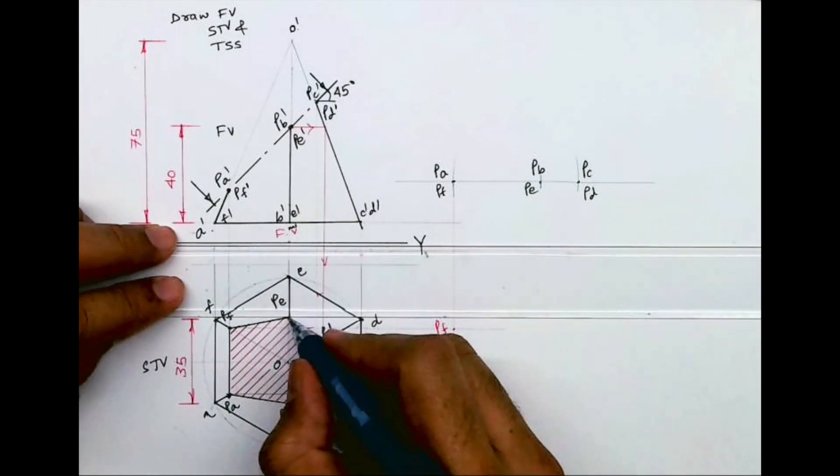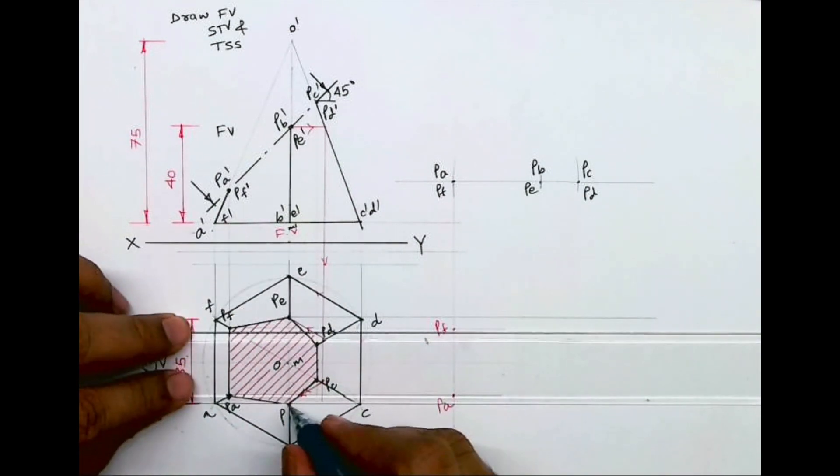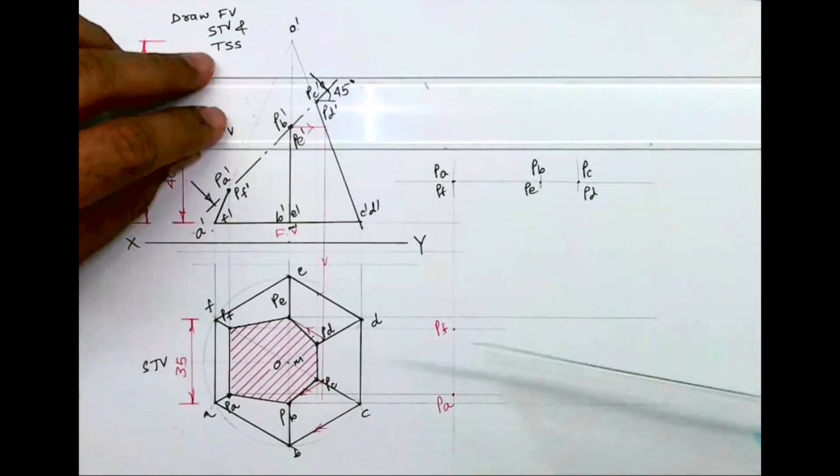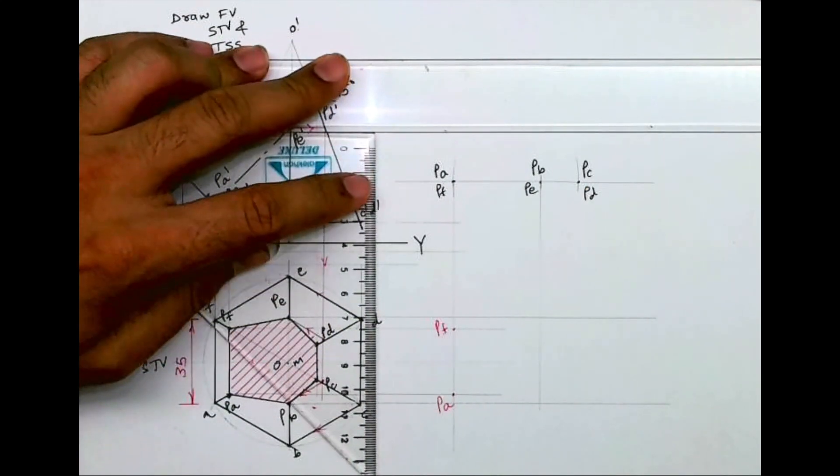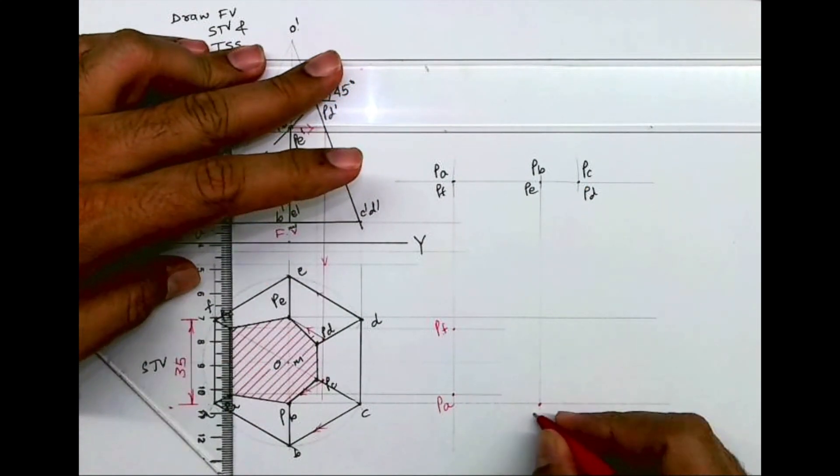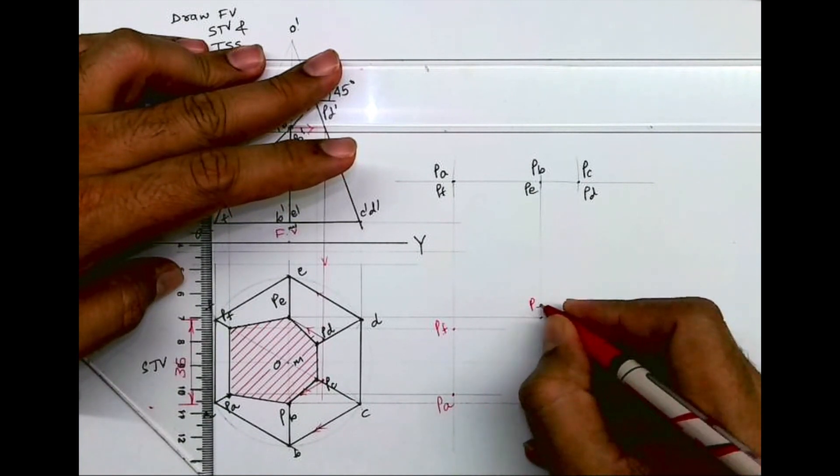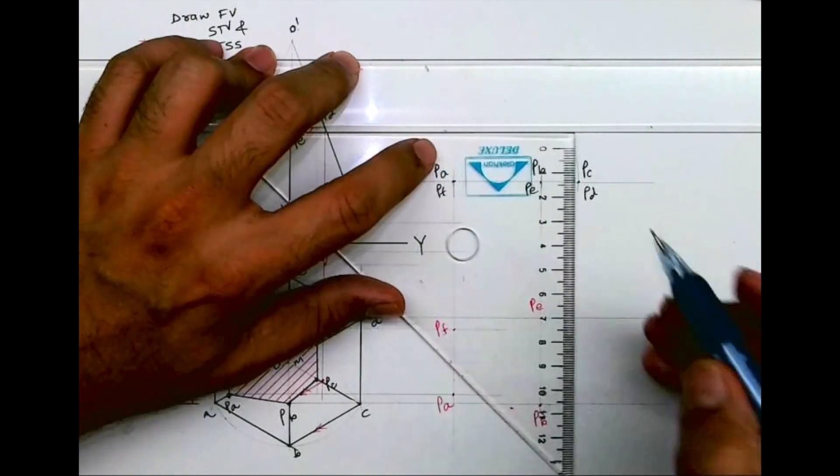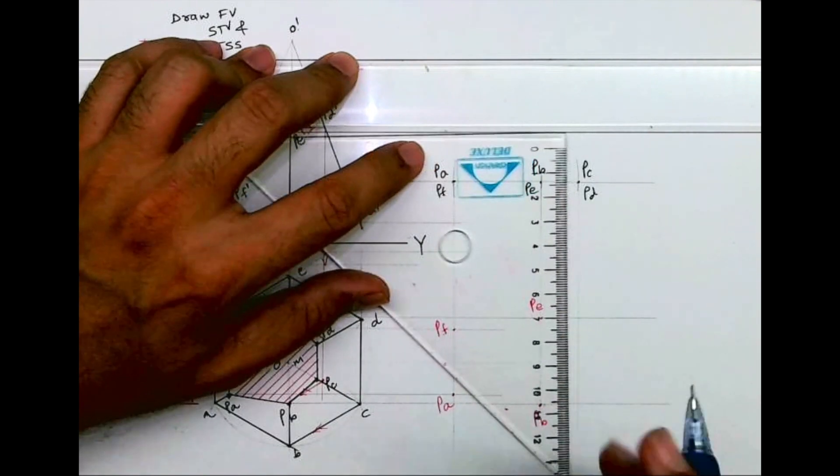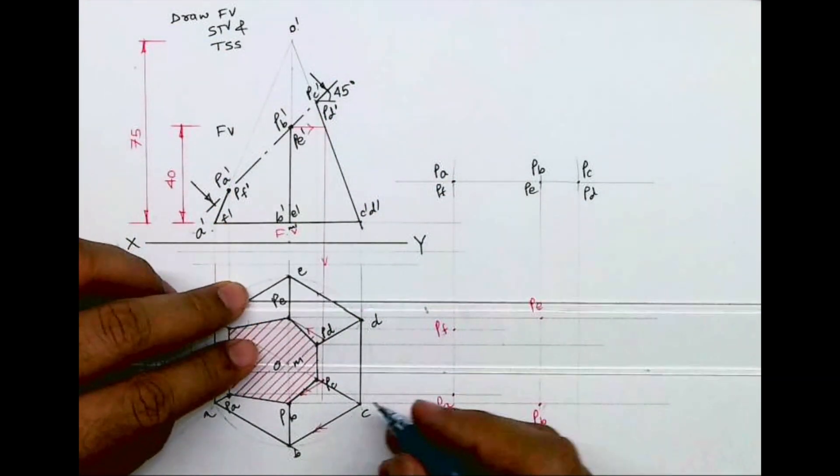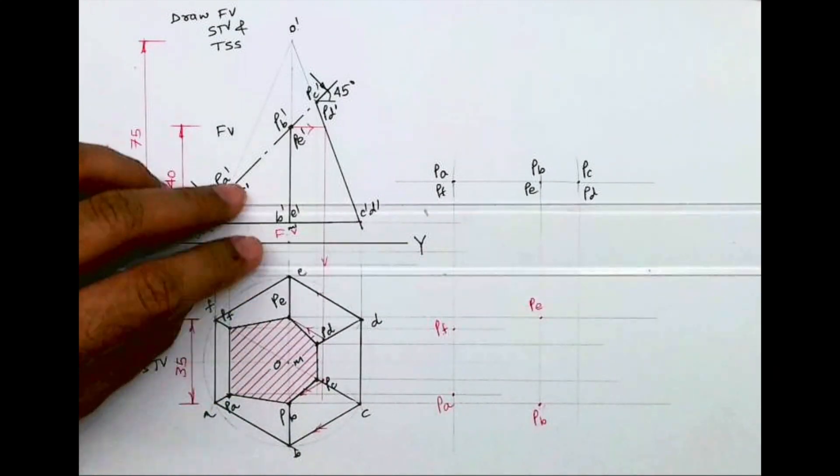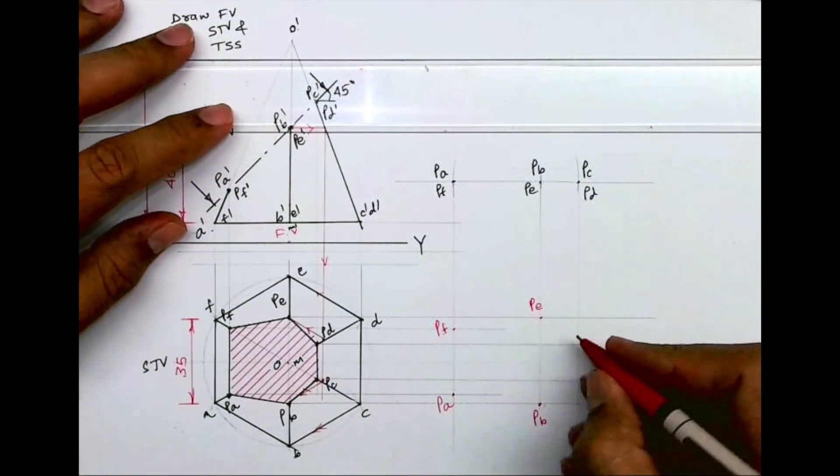Same with E, PB, and PE. After extending PB and PE, you project points from top view as well. Wherever it will cut, that is PB and PE. Same way, you project PC and PD from that point and from top view. Wherever they intersect, those would be the respective PC and PD points.